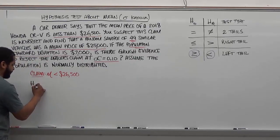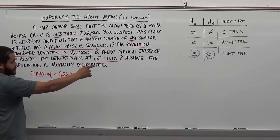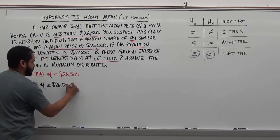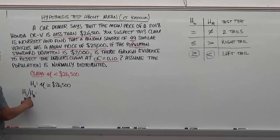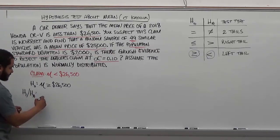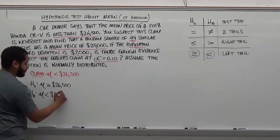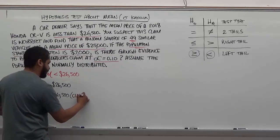For our second step, our null hypothesis: we know the mean is now going to be the counter argument of less than, which is greater or equal to, which we can see on the chart. And we take the same amount, $26,500. Our alternative hypothesis, which is also H1 or Ha, has the actual claim the same way we see it. We'll put in parentheses that this is our claim.